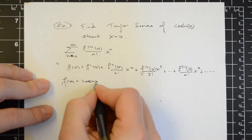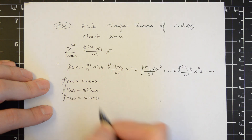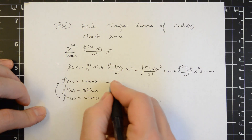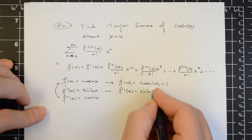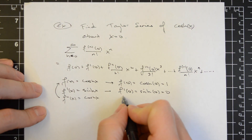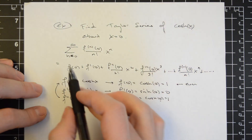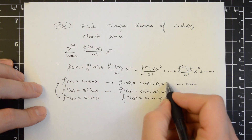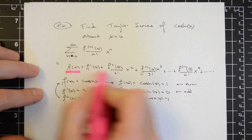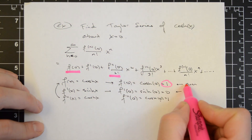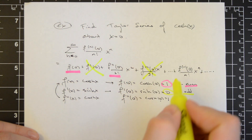f of x is equal to cosine of x. f prime of x is equal to sinh of x. f double prime of x is equal to cosine of x, which brings us back to f of x, hence there's a cyclic pattern. f of 0 equals cosine of 0, which equals 1. f prime of 0 equals sinh of 0, which equals 0. f double prime of 0 equals cosine of 0, which equals 1. The even derivative terms — the 0th, 2nd, 4th derivatives and so on — all return a value of 1, and the odd derivatives — the 1st, 3rd, 5th and so on — will all return 0.